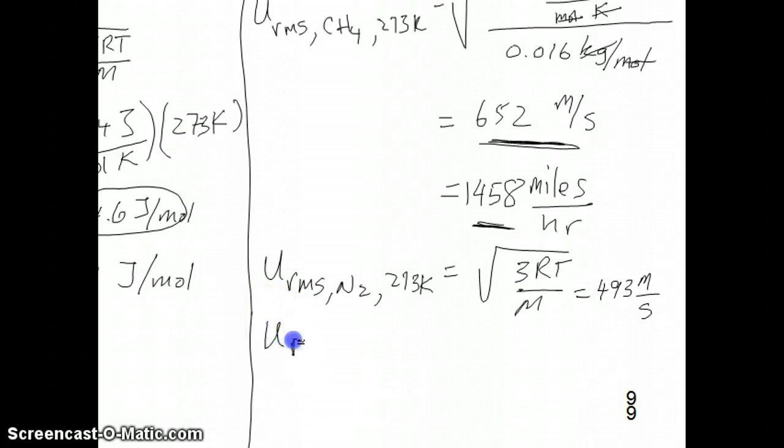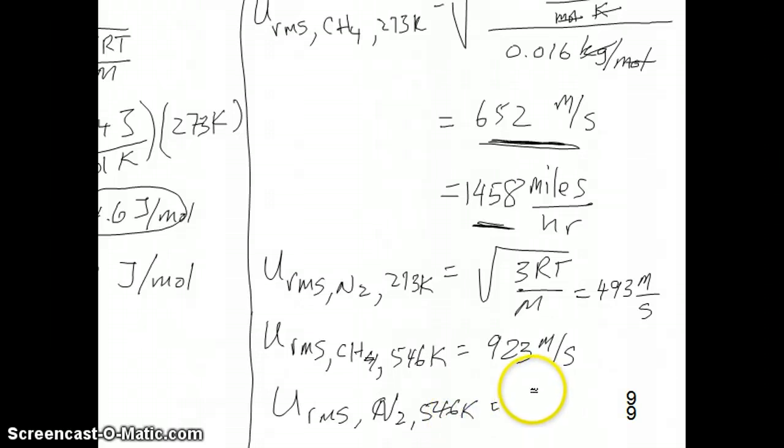You can do the same calculation at the second temperature, which is double the original 273, so it's 546 Kelvin. When you do that, the number you get here is about 923 meters per second for the methane. And if you do that for the nitrogen, you get a number that's at 546 Kelvin here. You get a speed that's a little bit slower, which is 697 meters per second for the speed of nitrogen at 546 K.